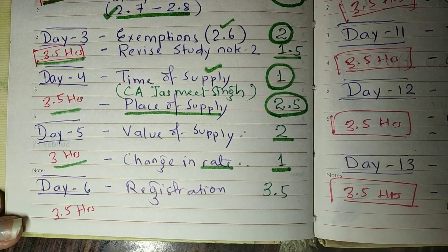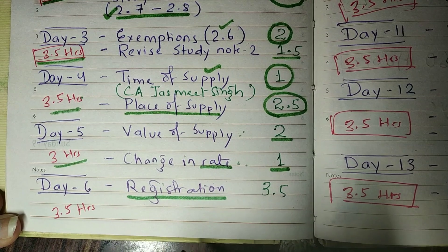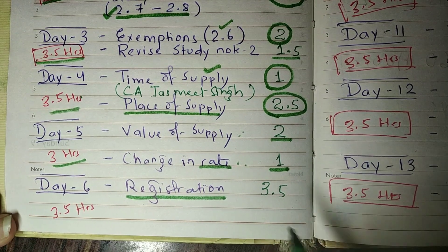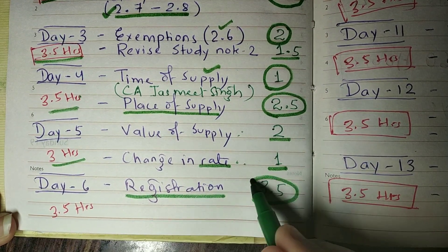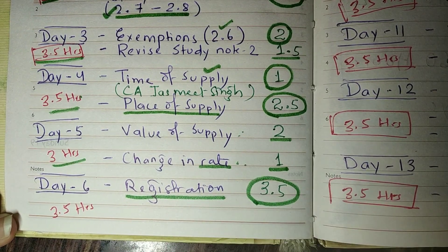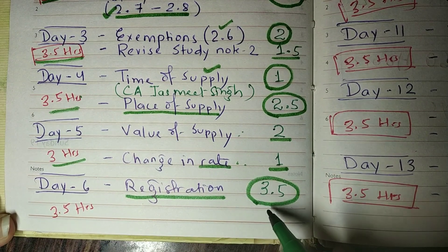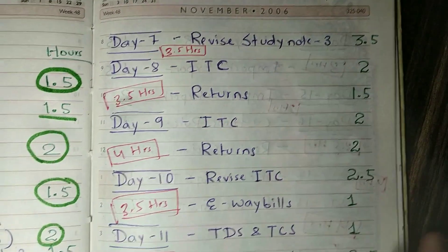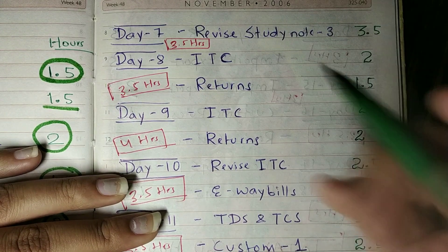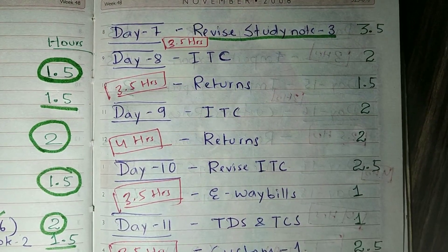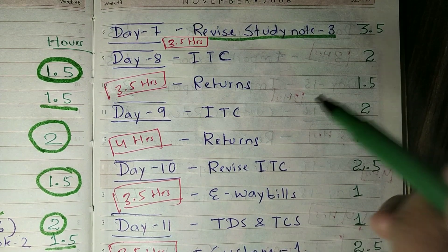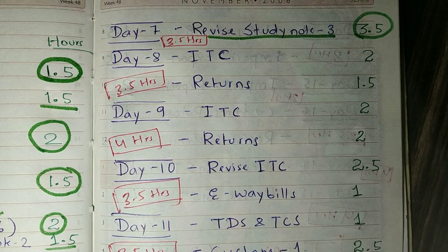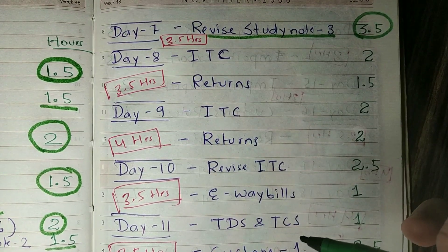On day 6, we will study the registration chapter. You have to understand the concepts and work through some illustrations — I have kept one full day for this chapter, which is 3.5 hours. On day 7, you have to revise study note number 3 — time of supply and value of supply — and this revision will take 3 hours.